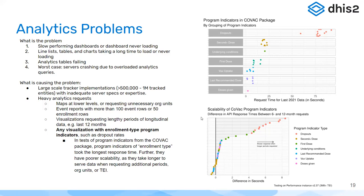Let's talk about some of the analytics problems of large-scale implementations. There's a sequence of events that usually happen: first we hear that we can't get our data in — apps are crashing, we can't enroll the 20 million patients we're trying to get into the system, we have 5,000 to 10,000 concurrent users and their apps are crashing. Then what happens next: we can't see our data. Everybody's putting data in but we can't get the analytics out — dashboards are crashing, event reports and line lists are loading forever, people are waiting 15 hours for analytics tables to run.